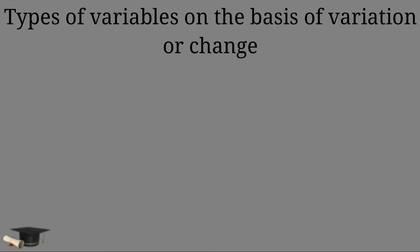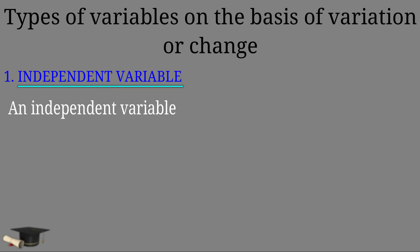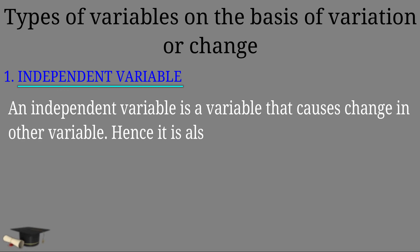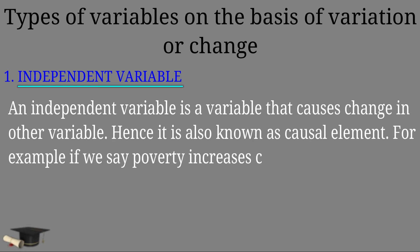Now, let's start types of variables on the basis of variation or change they bring. Number one, independent variable. An independent variable is a variable that causes change in other variables. Hence, it is also known as causal element. For example, if we say poverty increases crime, then poverty is an independent variable that caused increase in crime.